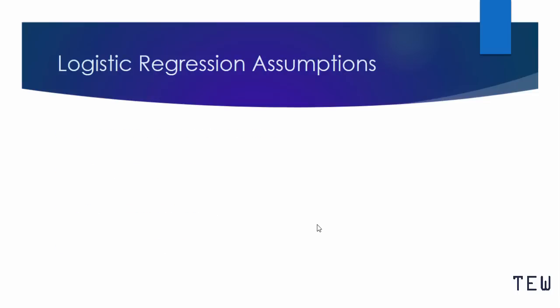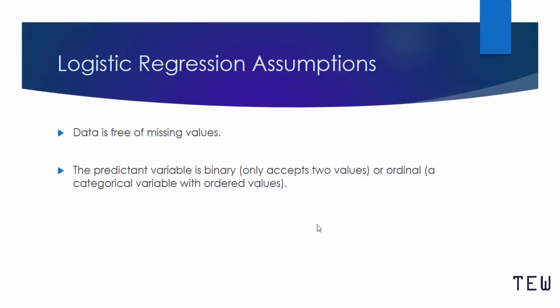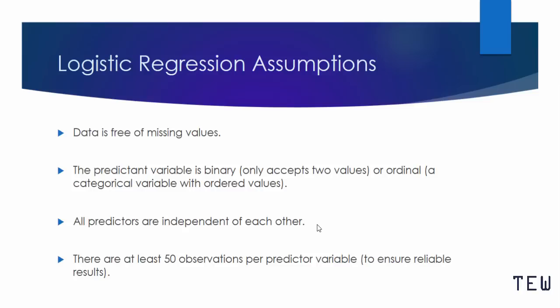Logistic regression has far fewer assumptions than linear regression, but there are some. First, data is free of missing values. Second, the predicting variable is binary — it only accepts two values — or it could be ordinal, a categorical variable with ordered values. Third, all predictors are independent of each other. Fourth, there are at least 50 observations per predictor variable to ensure reliable results.